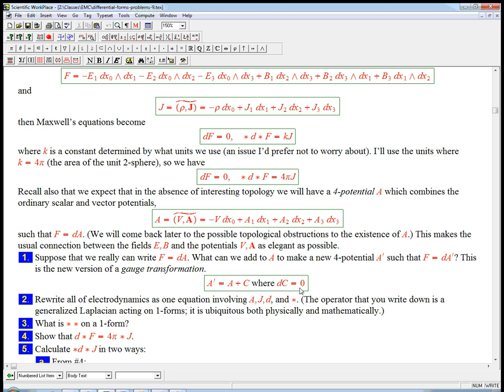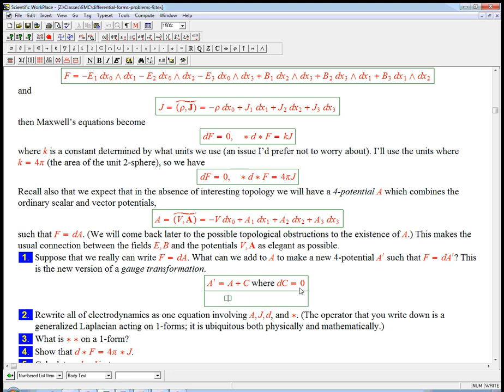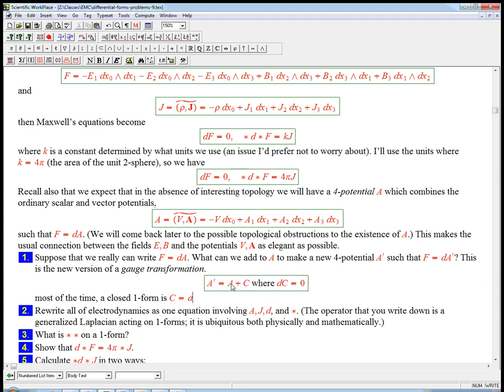So a closed one-form. Well, a closed one-form, let's actually go ahead and use the logic we did before. Most of the time, and again, there's going to be some interesting cases where this isn't true, most of the time, a closed one-form is of the form C equals just d lambda. Lambda is a pretty standard choice for this.